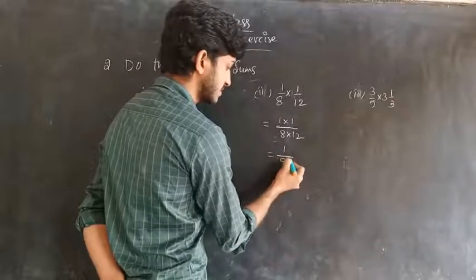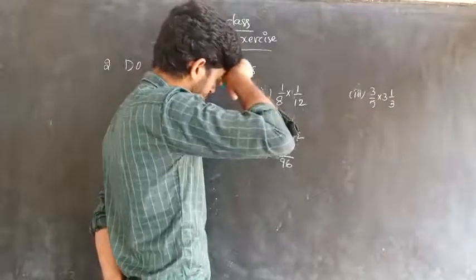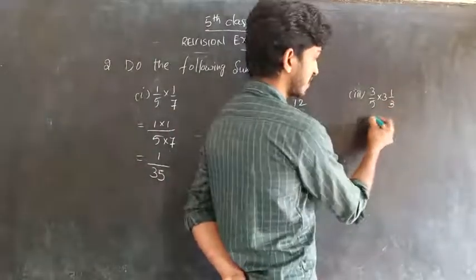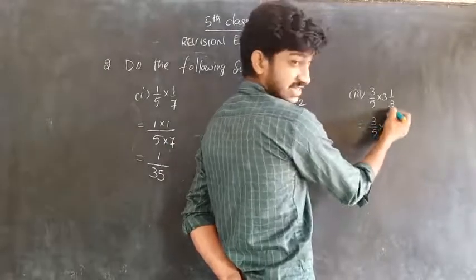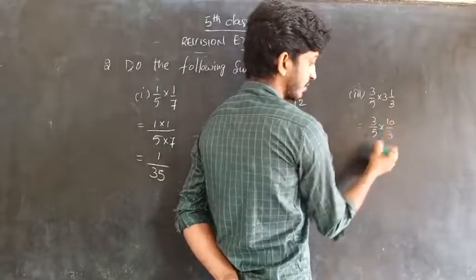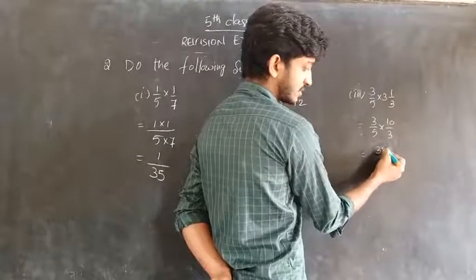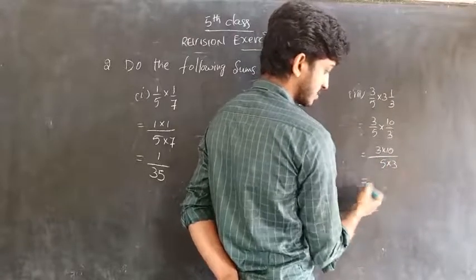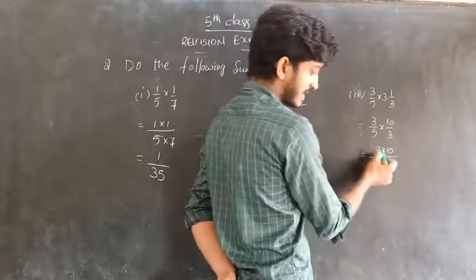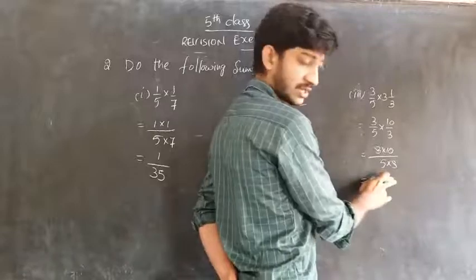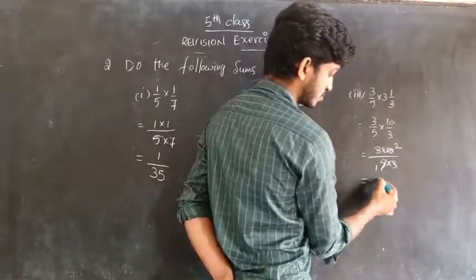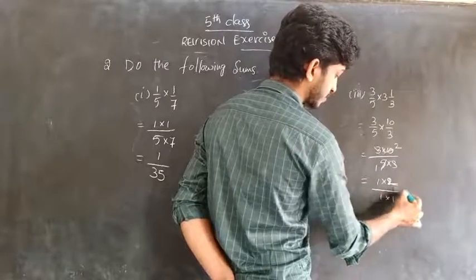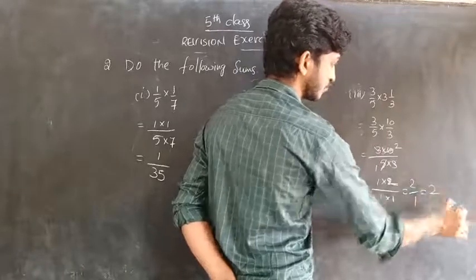See the problem here where a mixed fraction is given. First of all, convert this fraction into improper fraction. 3 threes is 9, 9 plus 1 is 10. 10 by 3. Now multiply each other: numerator into numerator, denominator into denominator. See here we have 3 and 3, cancel both. In the 5 table, 5 one time, 10 two times. So 1 into 2 divided by 1 into 1, that equals 2 by 1, means 2.